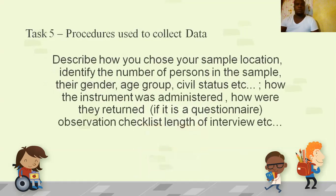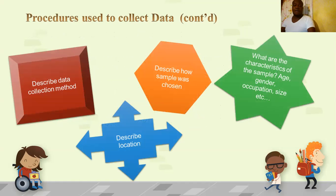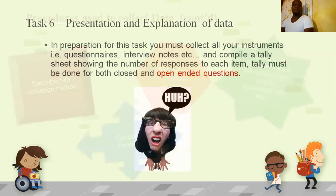Advantages of observation: it allows the researcher to observe large groups, and it allows observation of a person's true behavior with no chance of pretense — since people often don't know they are being observed, you see the real truth about the social issue. For the procedure used to collect data, describe how you chose your sample location, identify the number of persons in the sample, their gender, age group, and civil status, how the instrument was administered, and how questionnaires were returned, or the length of the interview.